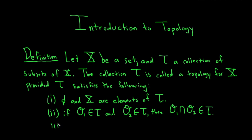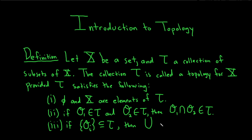The third condition is that if we have some arbitrary collection O sub i that is a subset of tau — so each O sub i is an element of tau — then the union of the O sub i's is also in tau. And this is just any union; it's not necessarily finite. It could be any arbitrary collection.